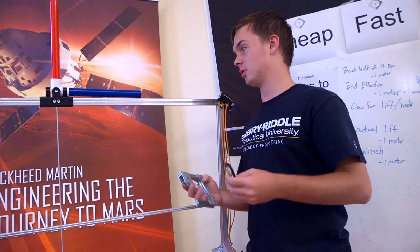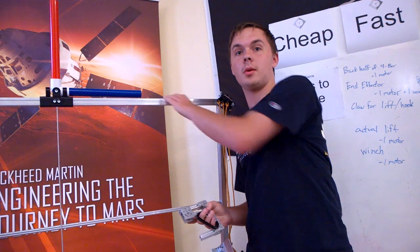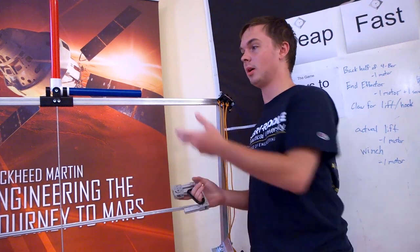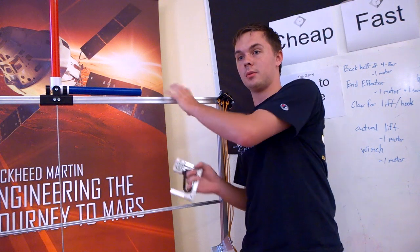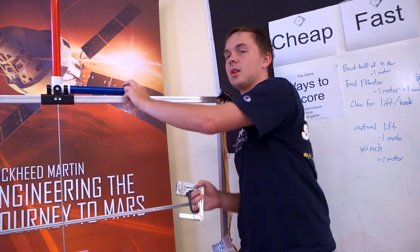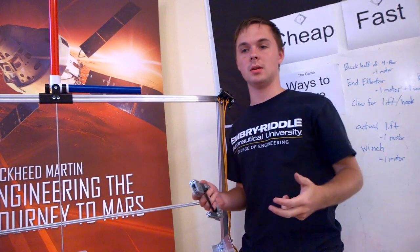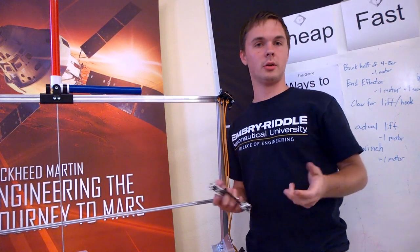I'm working on a hook to grab onto the bar for when we pull our robot up for the end game. Our goal is to have it grab onto this portion of the bar, but possibly be able to grab onto the all-clear bar as well.